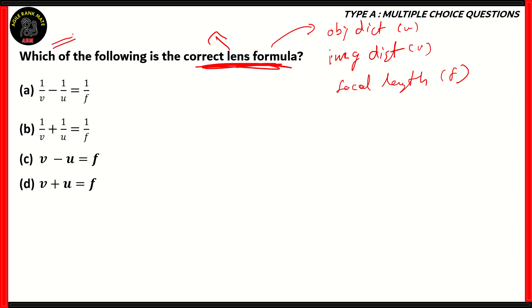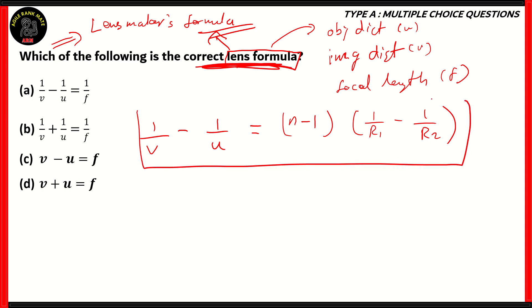Now, the lens formula itself is derived from another formula known as the lens maker's formula. Now, the original lens maker's formula is 1/V - 1/U = (N-1) times (1/R1 - 1/R2). So, this is the original lens maker's formula. Let's call this equation equation 1.